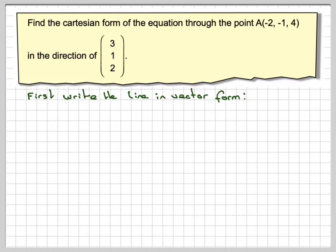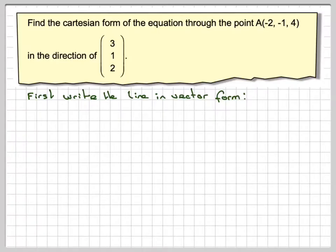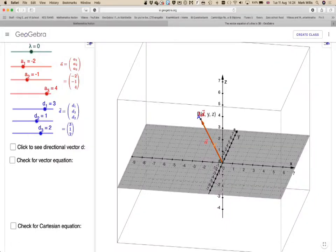So I'm going to look at it using this GeoGebra app, which is in the notes of the video. So we're at (-2, -1, 4) and a directional vector of (3, 1, 2).